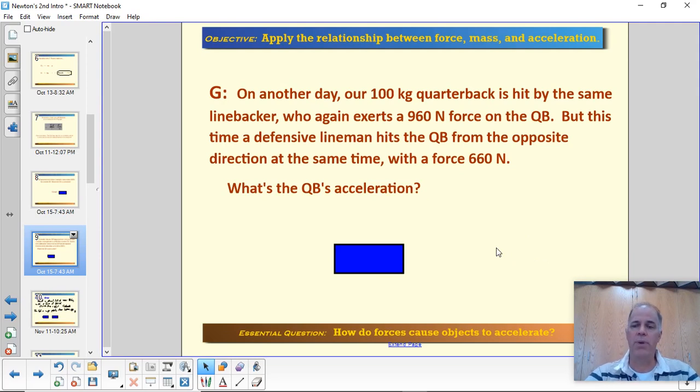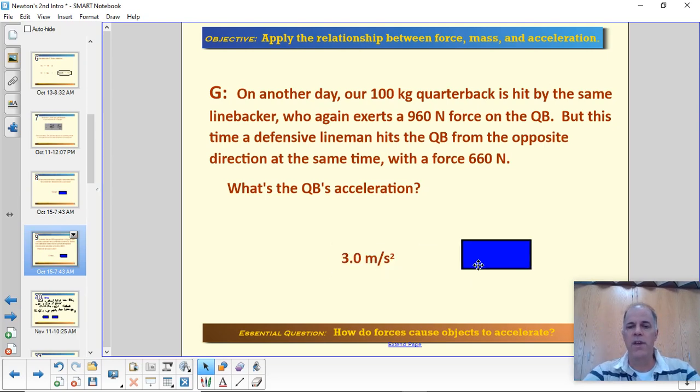If you haven't got the answer already, pause it. I'll give you the answer here in 3, 2, 1, and the answer is 3 meters per second squared. How do we get that? 960 newtons of force one way and 660 newtons of force the opposite direction. So it's going to be 960 minus 660. The net force is 300 newtons. 300 newtons divided by 100 kilograms gets an acceleration of 3.0 meters per second squared.